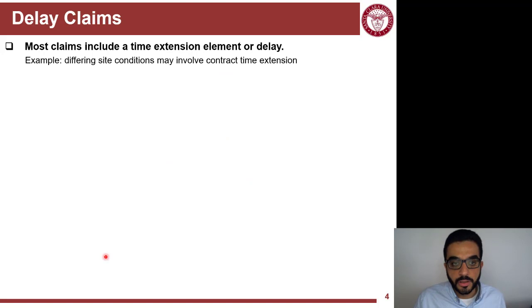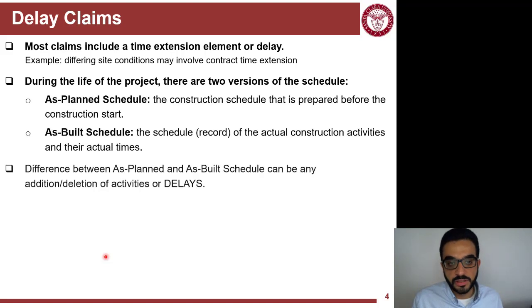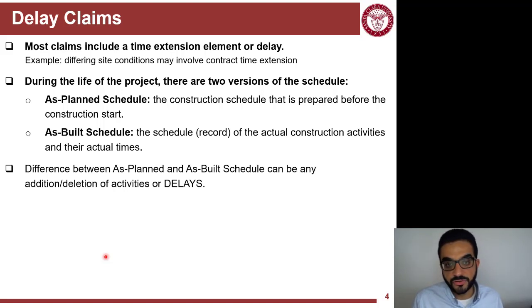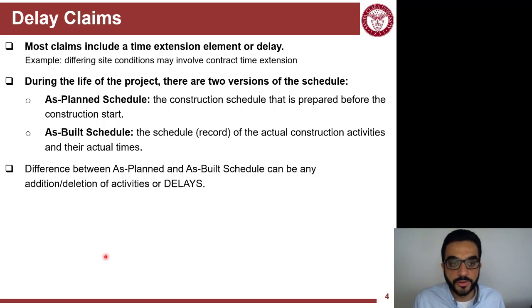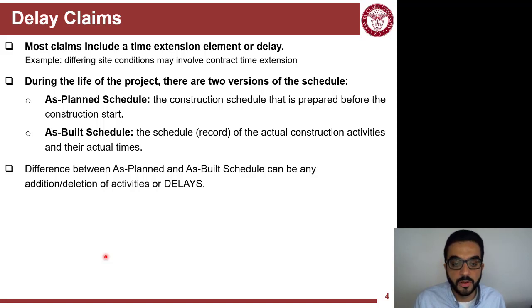Delay claims mostly have time requests to extend the schedule of the project by the contractor. The issue is how to calculate these time extensions that the contractor has the right to. To do that, you need some information — this is another proof that documentation in construction projects is really important. You need to have a record of the as-planned schedule and the as-built schedule.